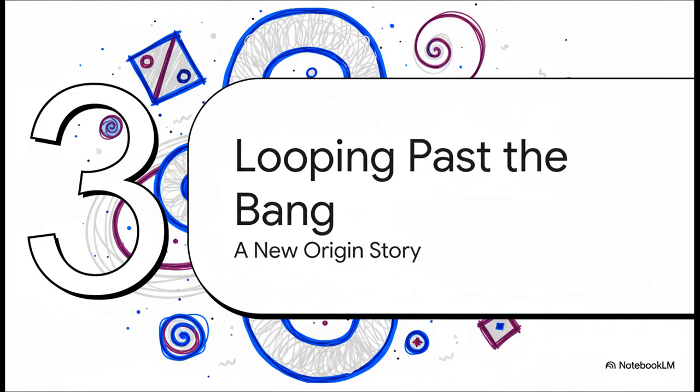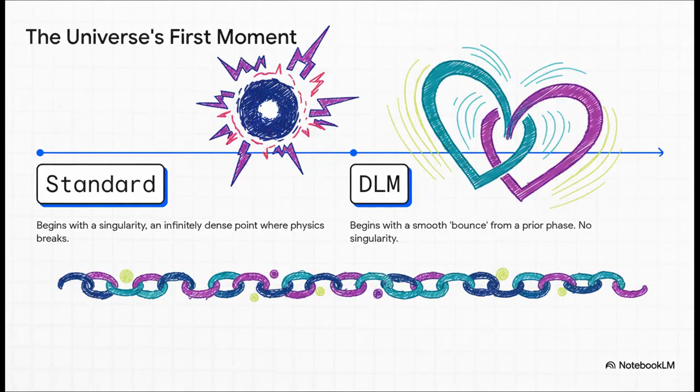Right. So we have this cosmic heartbeat. How in the world does that fix the problem of where the universe came from? Well, this is the key difference. The standard model – our current one – slams into a wall at time zero. It has this impossible singularity where physics just dies. DLM, on the other hand, just loops. It says the universe didn't start from a single point. It reached a super, super dense, but totally finite state, and then it just bounced. It looped from a previous cycle. No hard start. No breaking the laws of physics.